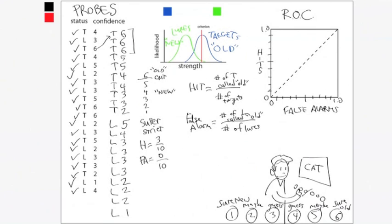We say that they've got 30% hits, 0% false alarms. And so this is our super strict point on the ROC curve. That only gives us a small bit of the picture. What we want to do is we want to move this criterion down.